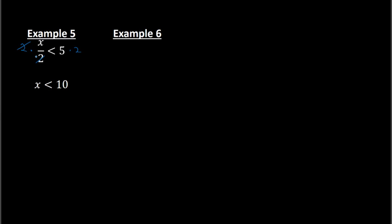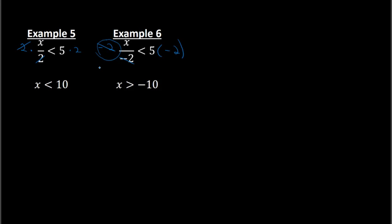Example 6: we have x divided by negative 2 is less than 5. Here we need to multiply by a negative 2 to get these to cancel, and multiply over here by a negative 2 as well. So I have x on the left and negative 10 on the right. But because I am multiplying by this negative 2, I need to switch the inequality. So instead of a less than sign, it's a greater than sign. My answer is x is greater than negative 10.